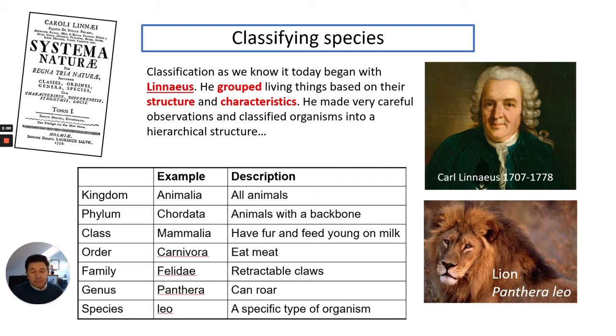A good way of remembering that order is to use a mnemonic. For example, one mnemonic I use as Dr Biology is king prawn curry or fat greasy sausage. That reminds me of what the order of the hierarchy is.